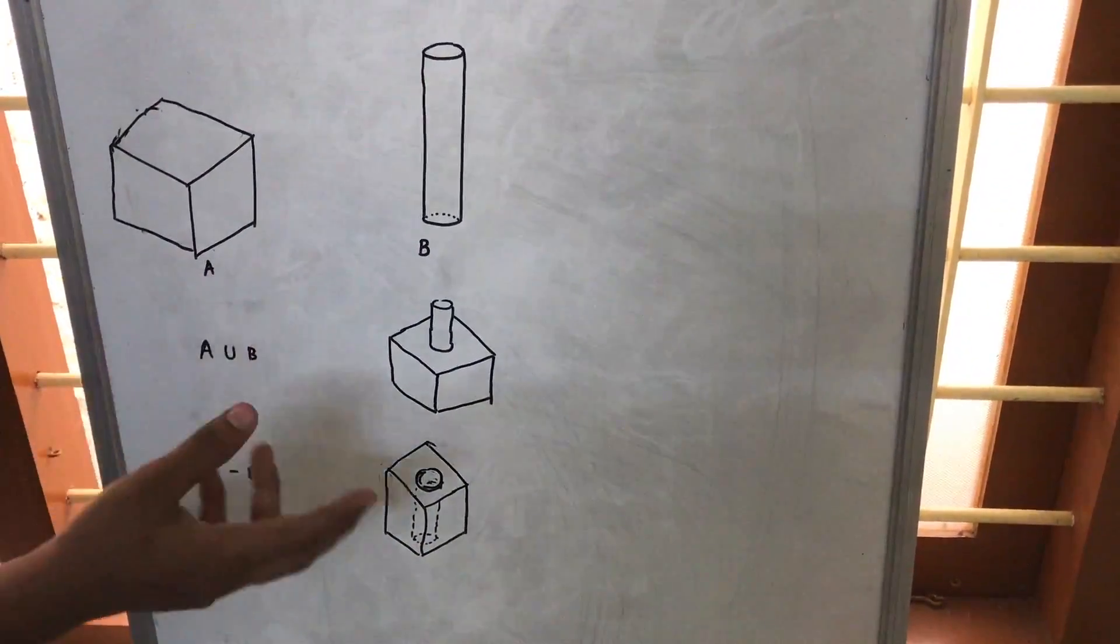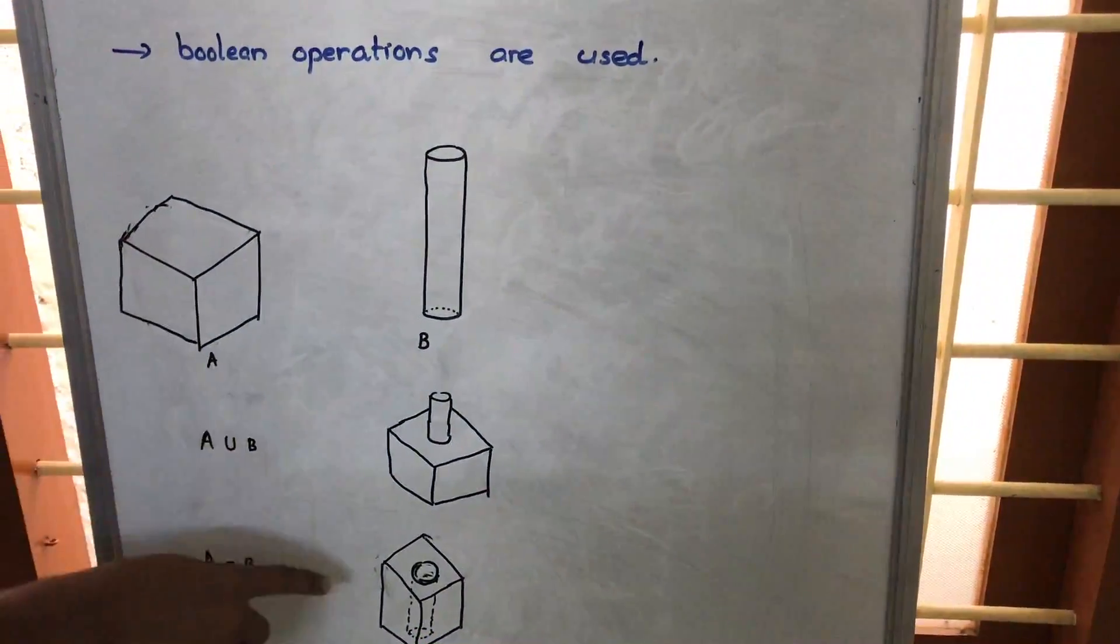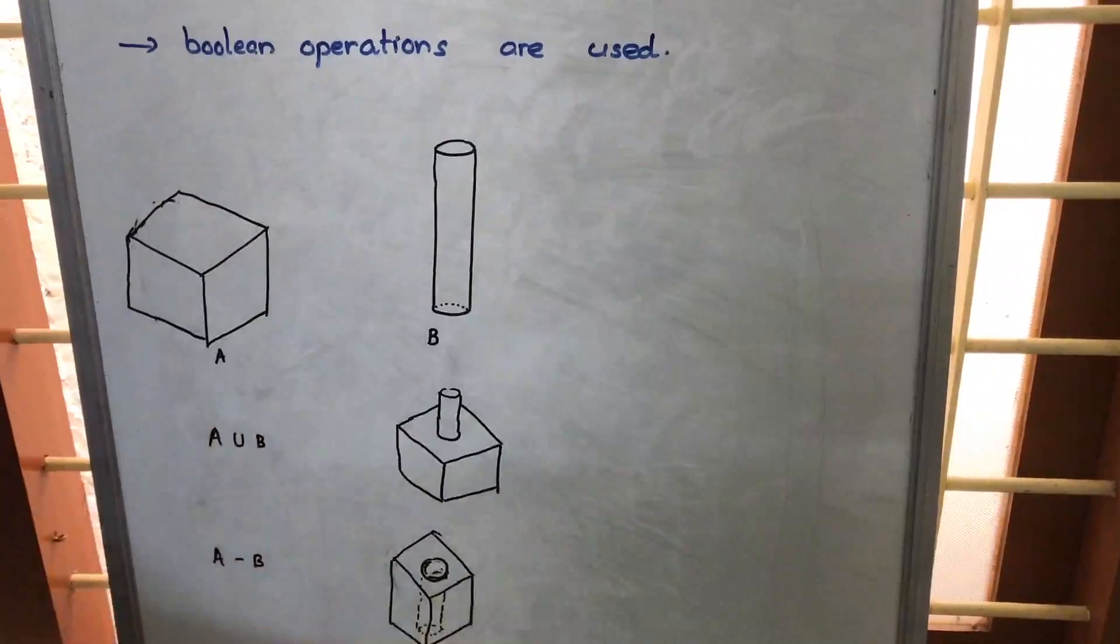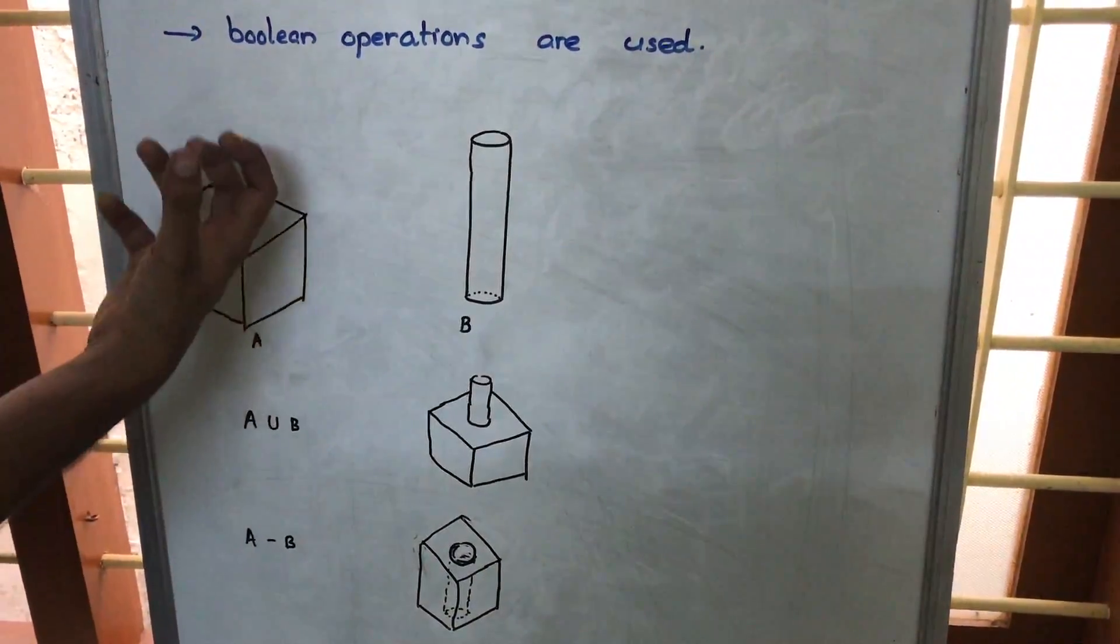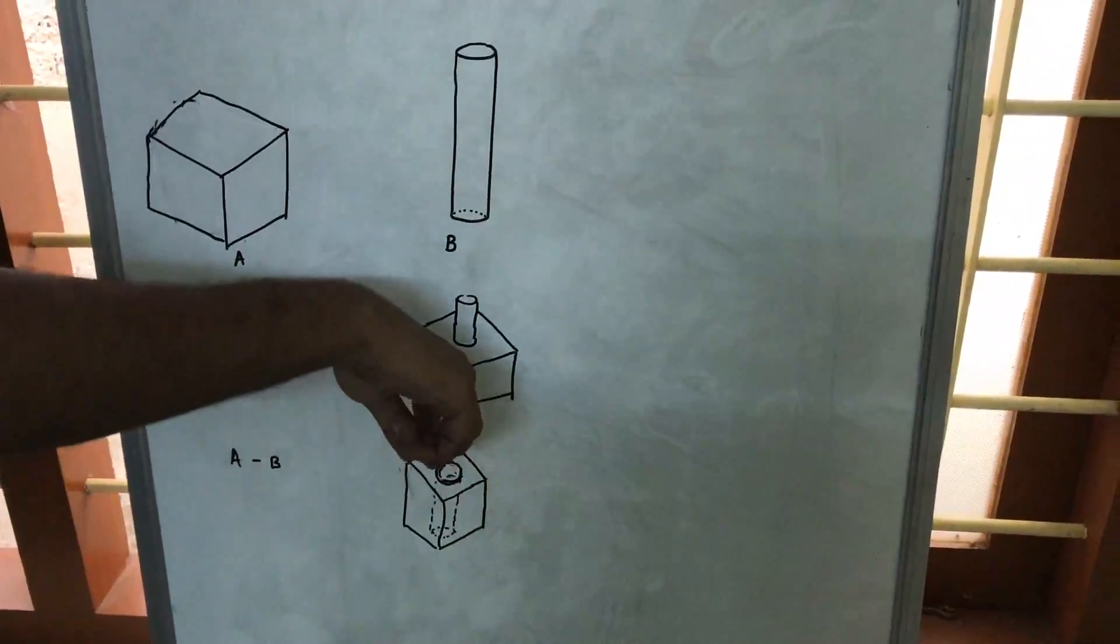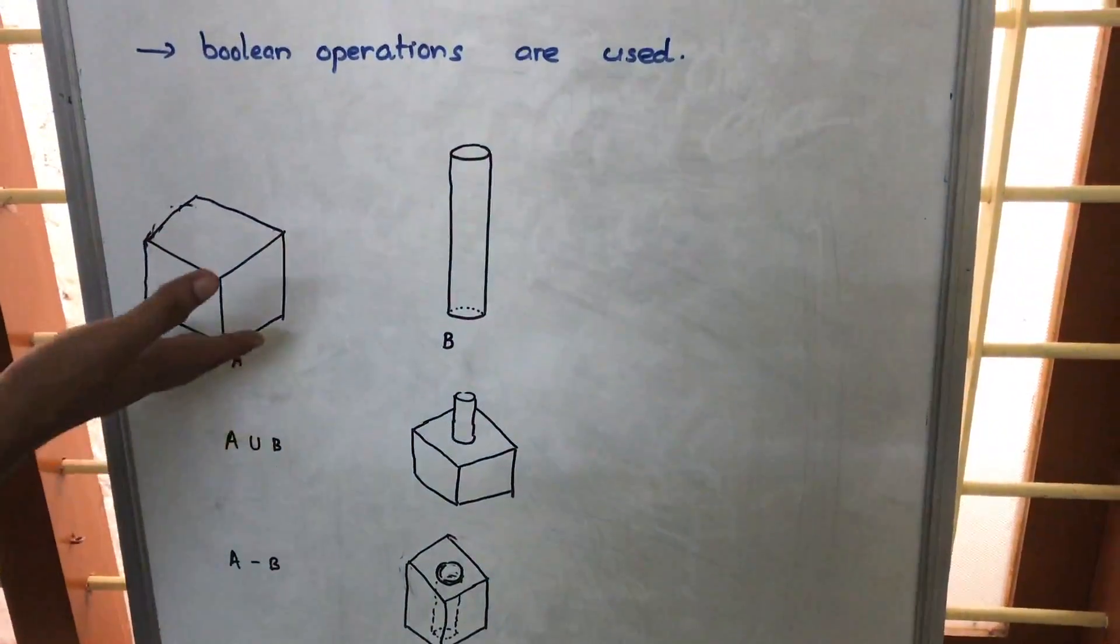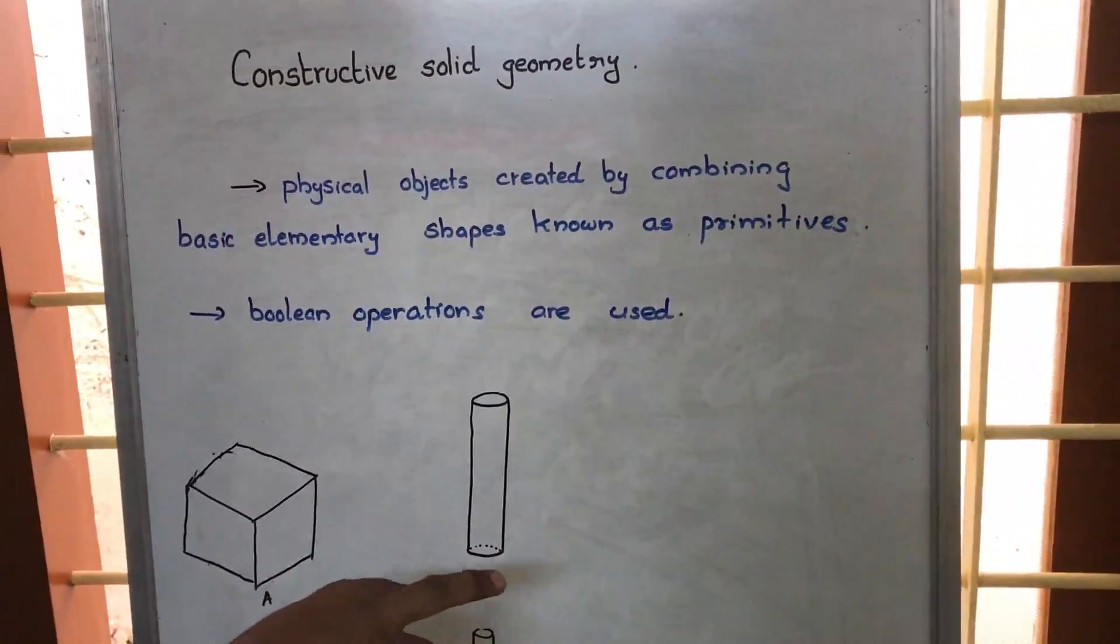Now A minus B, that means from A this B is eliminated. From A we are drilling a hole and removing this B. We will be carving out that B and we are getting a figure somewhere like this, where at the center we are getting a hole.